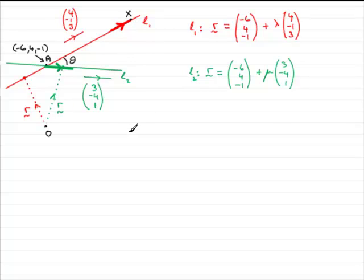So what we've got to do then is just say that when lambda equals 4, substitute it into L1 here and you therefore have that R equals minus 6, 4, minus 1